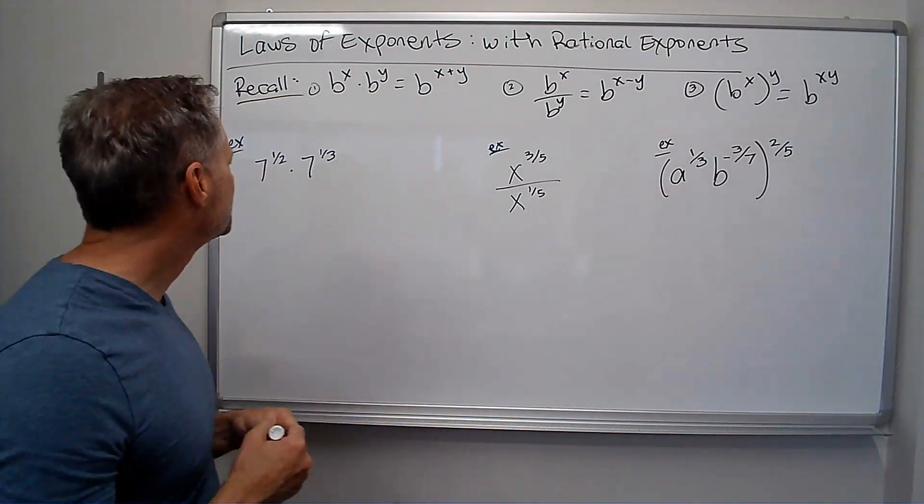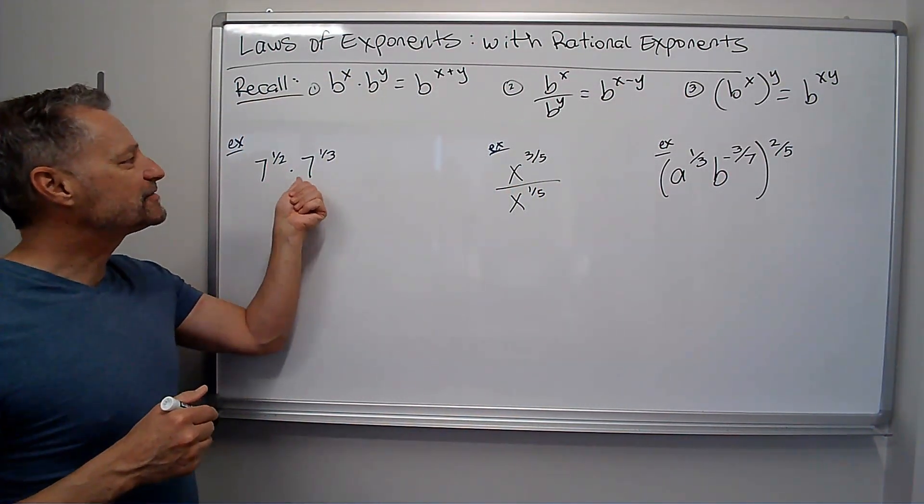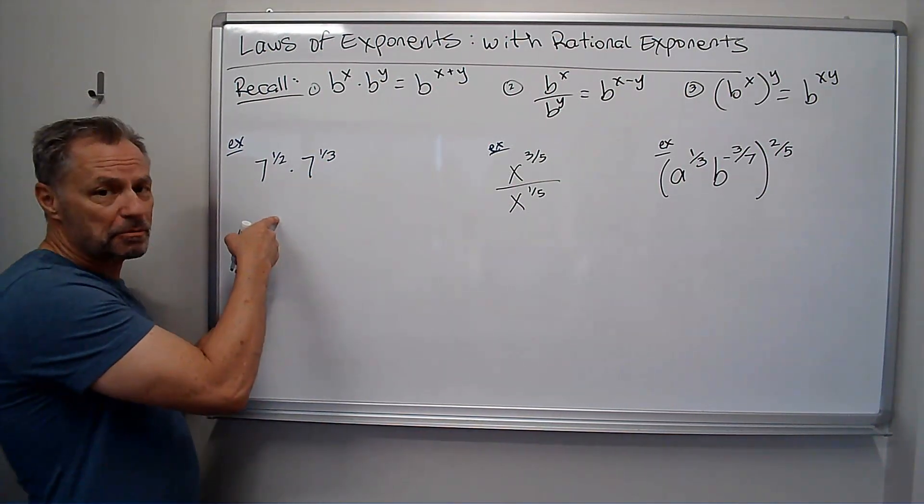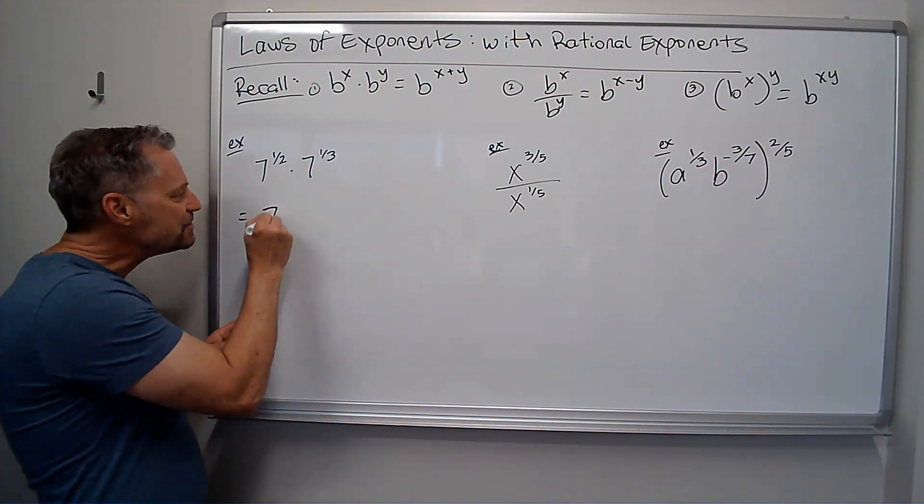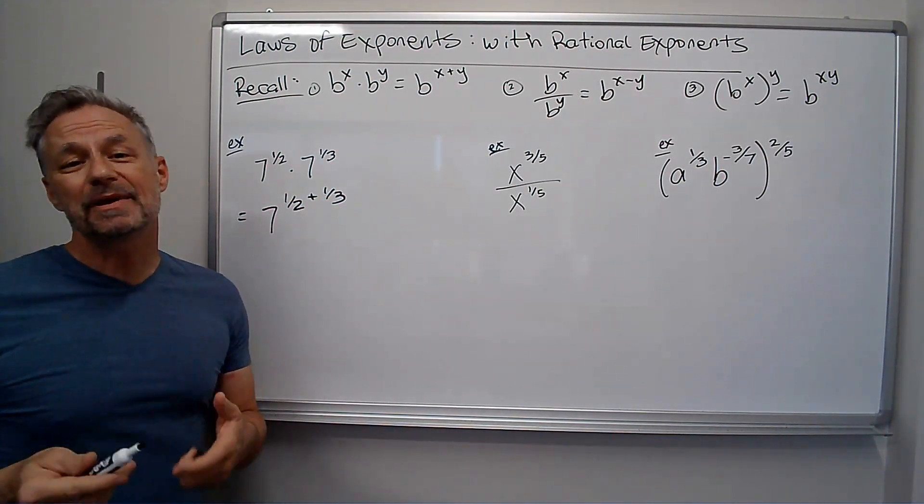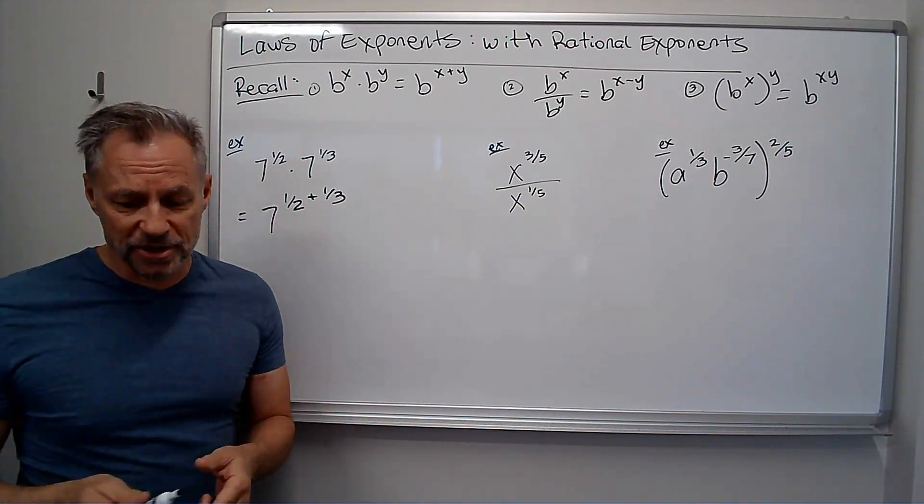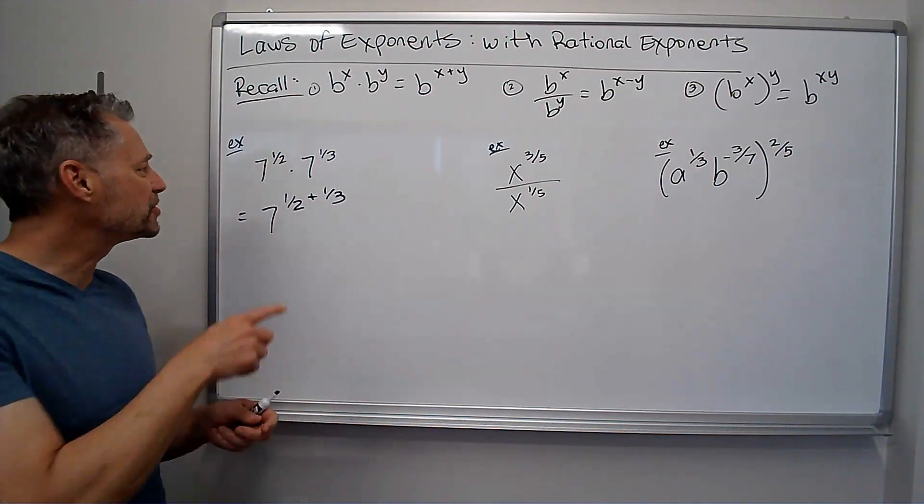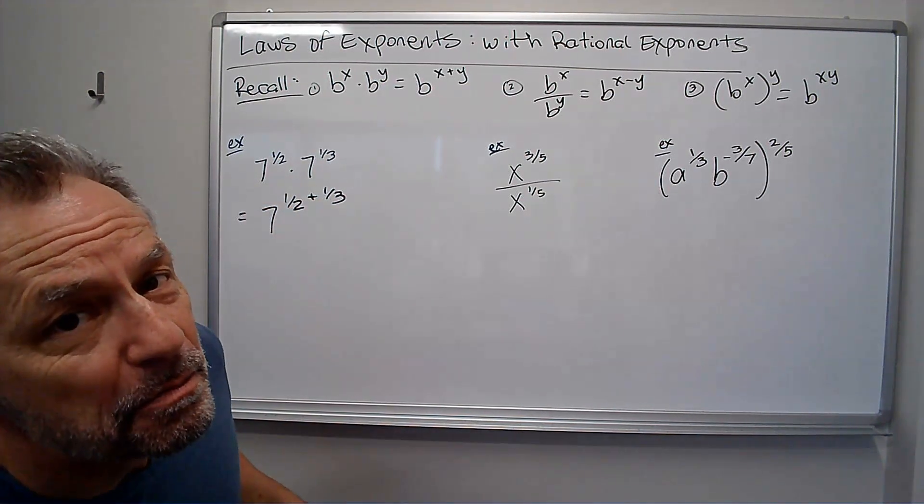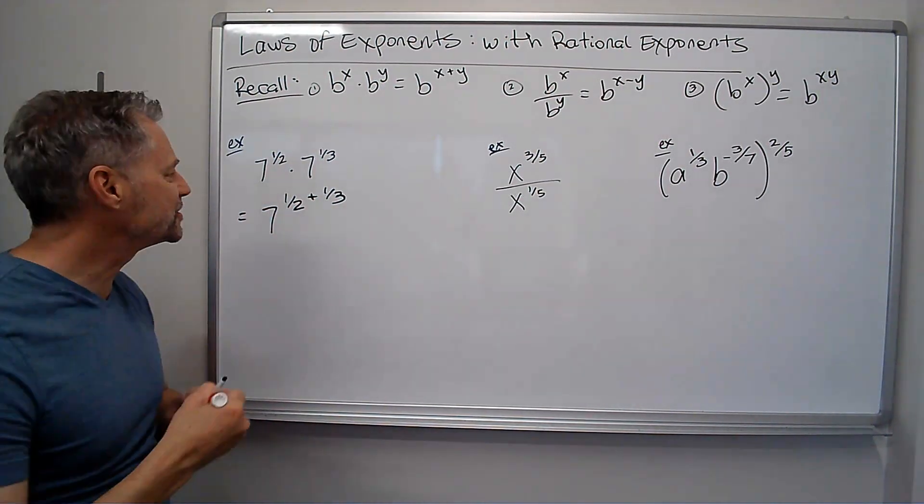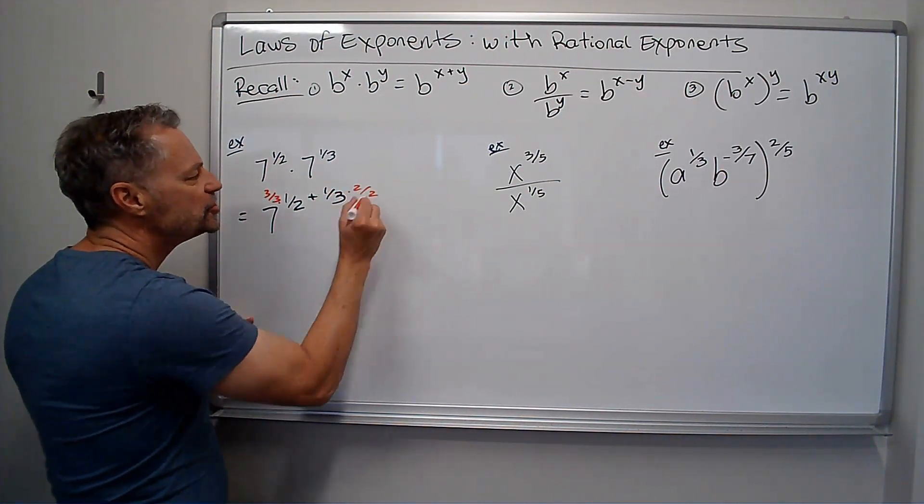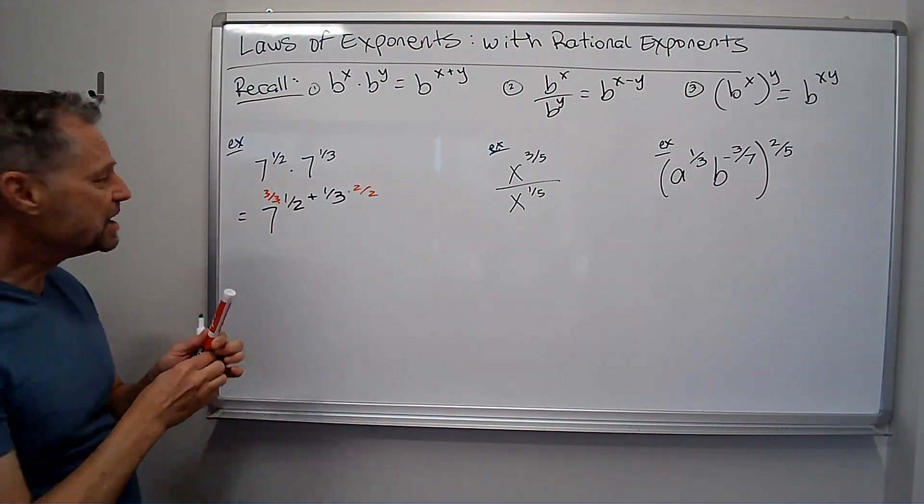Let's look at an example of each one. So 7 to the 1 half times 7 to the 1 third. I have the same base, so I can multiply those together. I keep the base, I add the exponents. Now remember, in order to add exponents, we need a common denominator. So think of the smallest number that 2 and 3 both can go into, which is 6. So I need to build them both up to 6 on the denominator. So I'm going to multiply this one by 3 over 3, I'm going to multiply this one by 2 over 2.